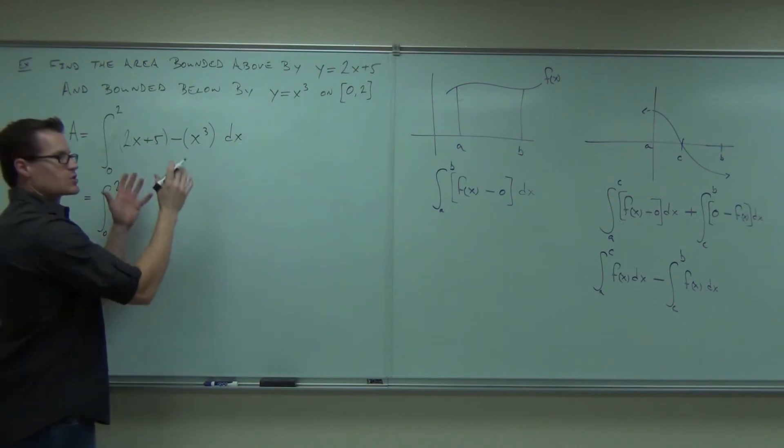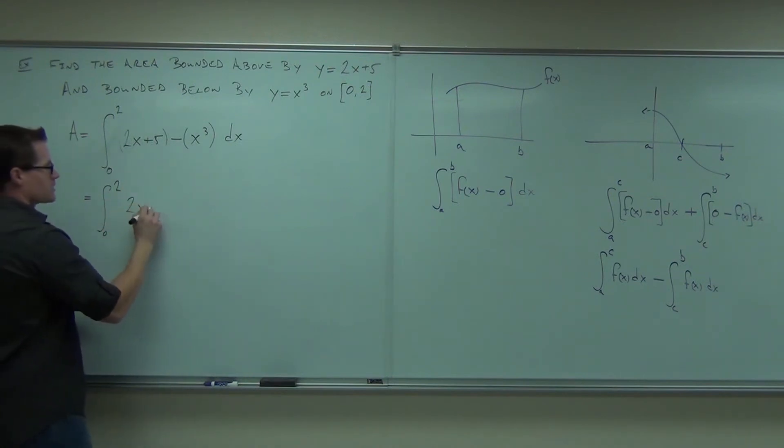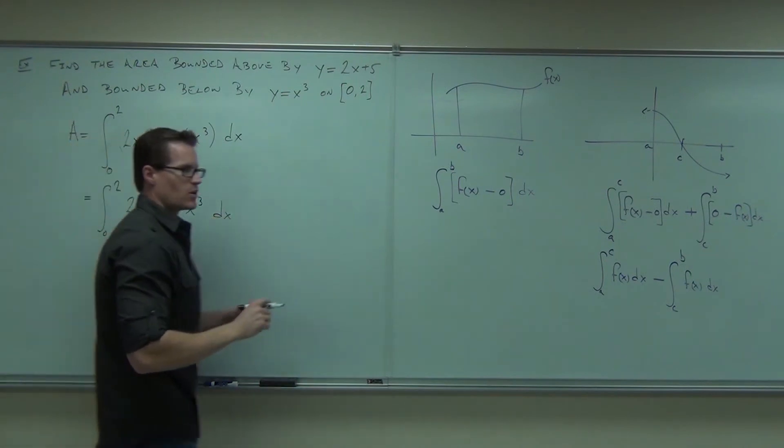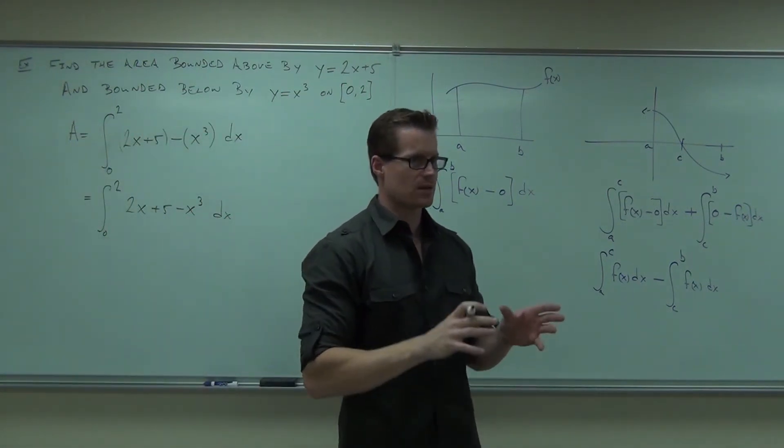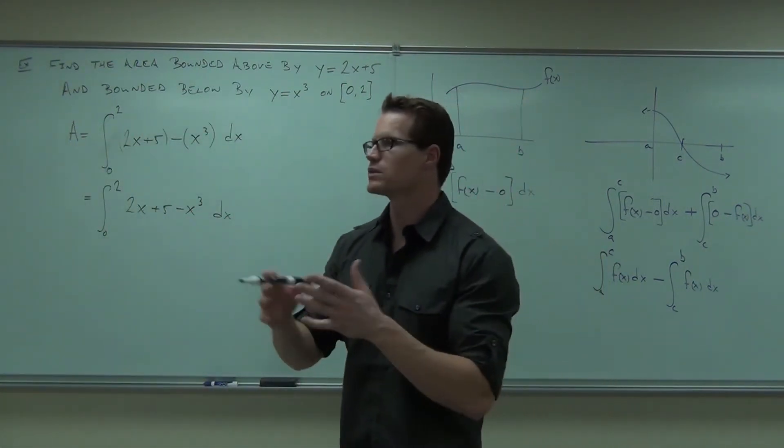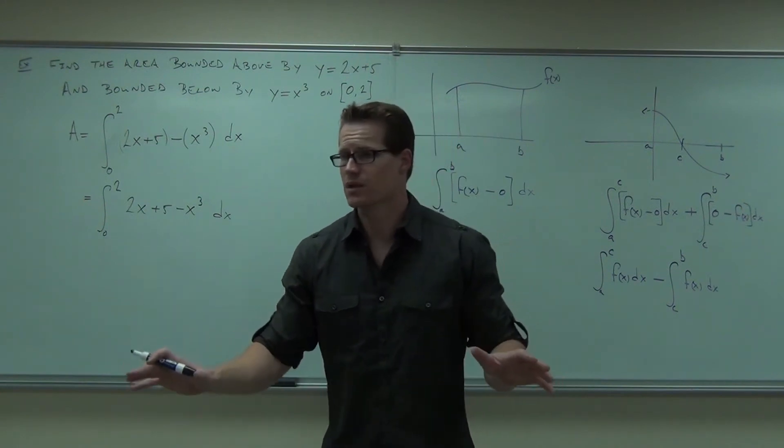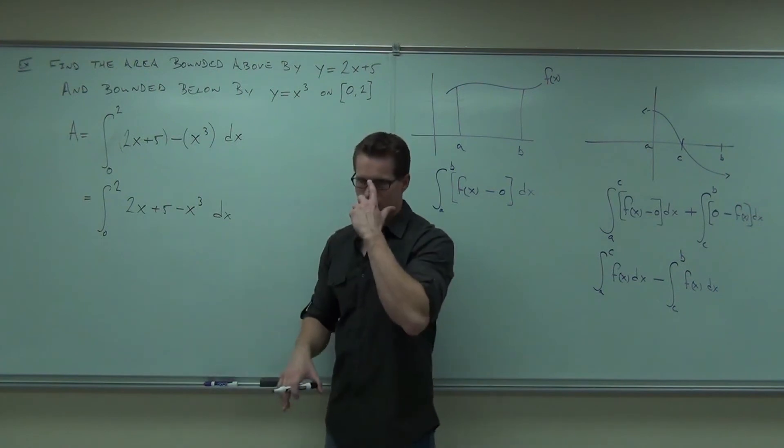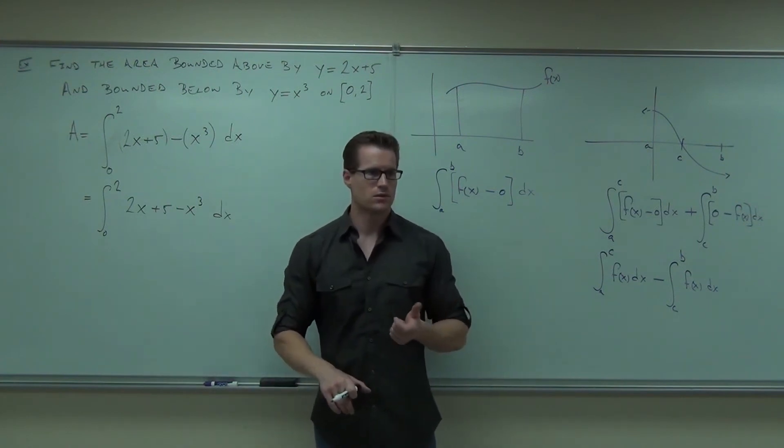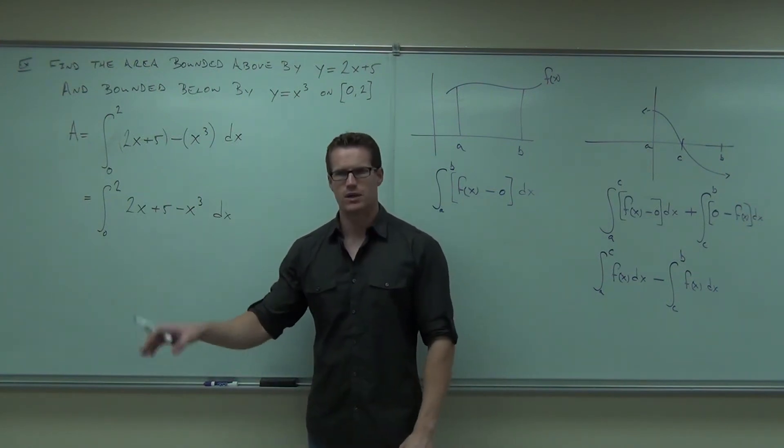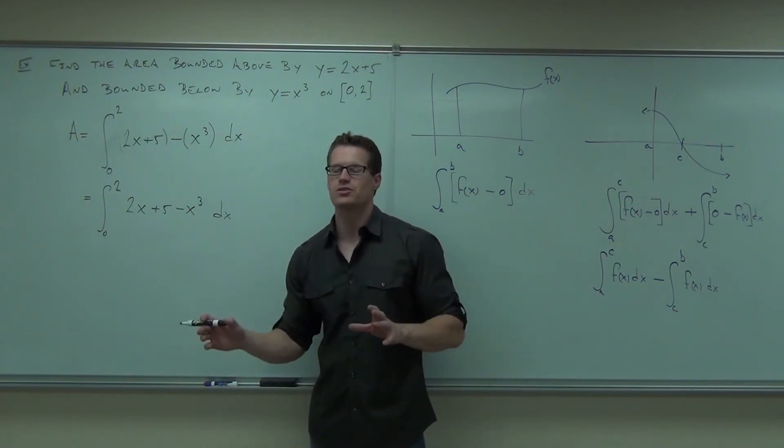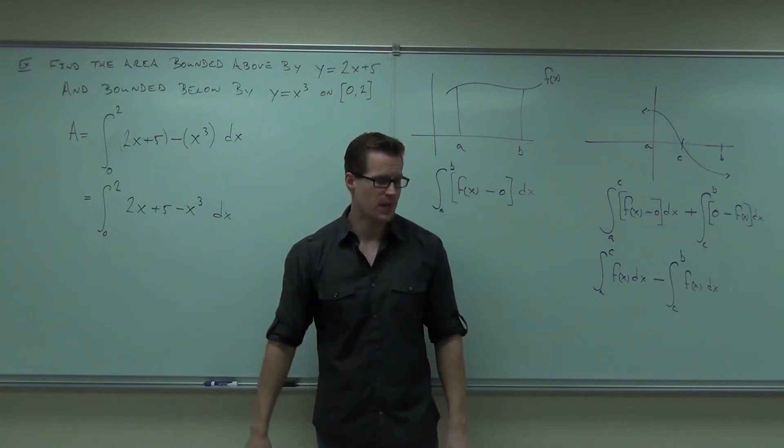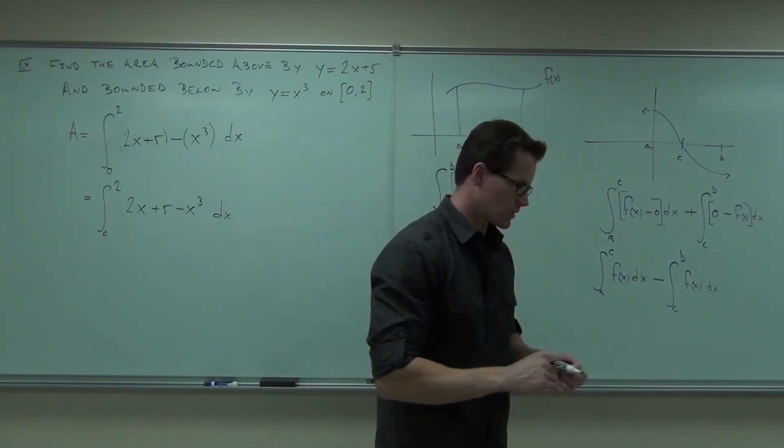So parentheses in this case aren't doing anything. We got 2x plus 5 minus x cubed dx. Notice how we don't have to have two separate integrals. When we put them together like this, it just basically becomes one large integral, which is great. We could easily do that. It's just subtracting off this piece of the puzzle. Can you do the integral? Go for it. Remember that what I'm teaching you now is really not anything new. It's just an application of the process, application of integrals to find an area between two curves.